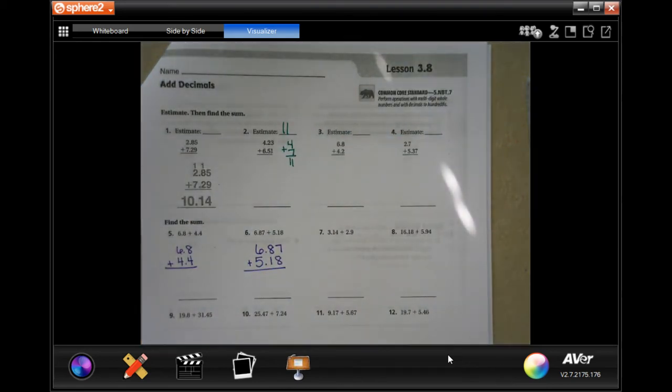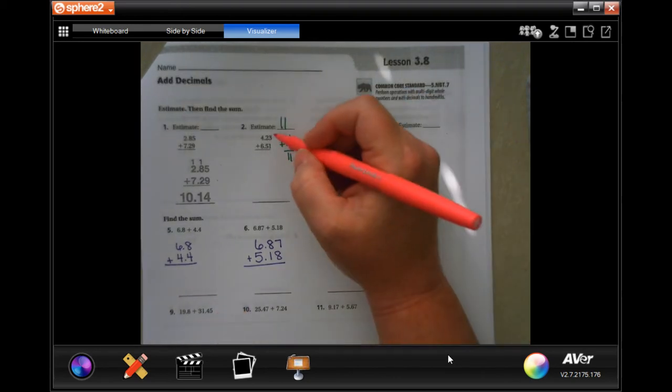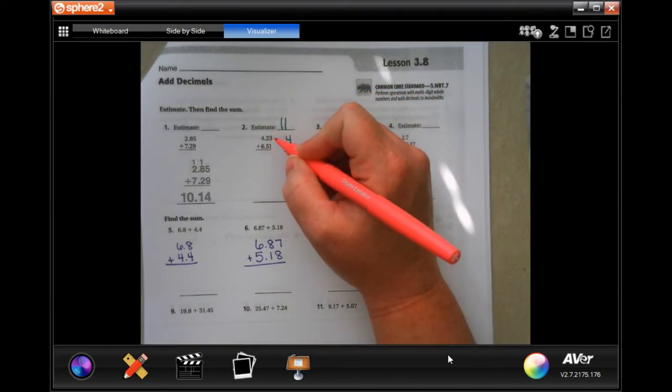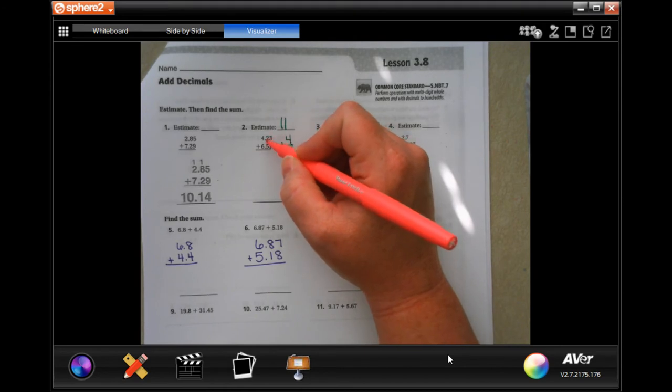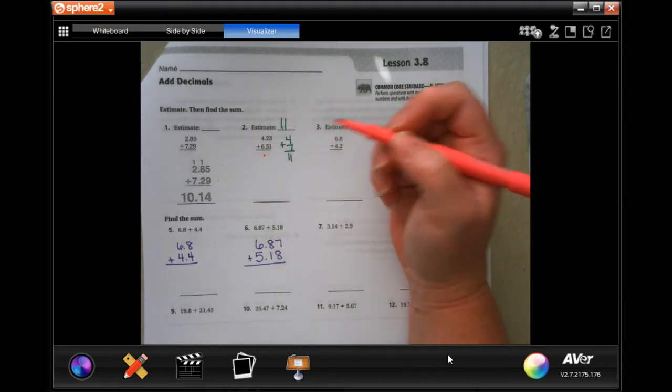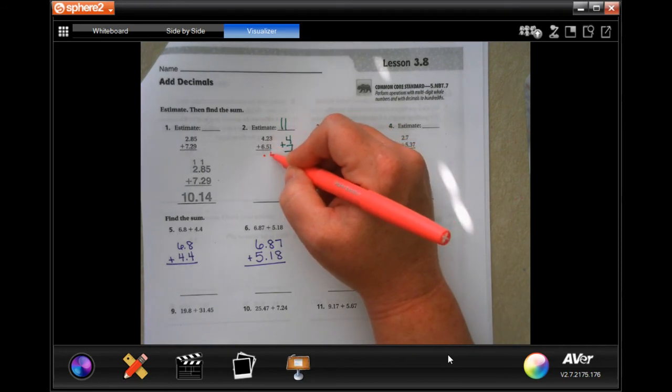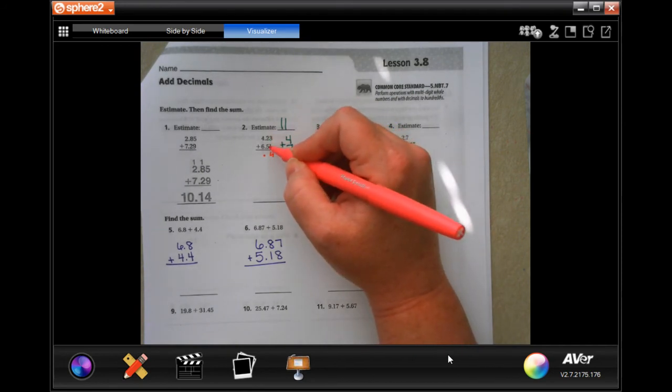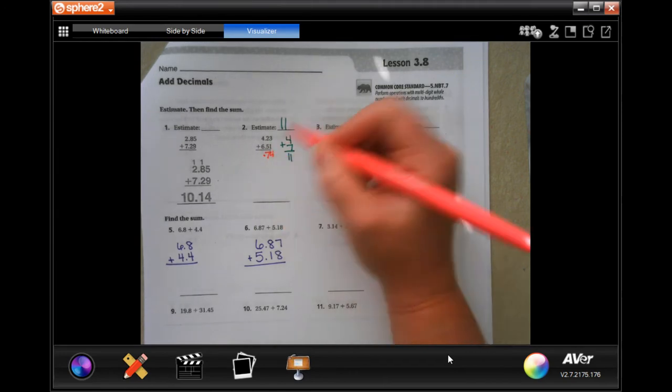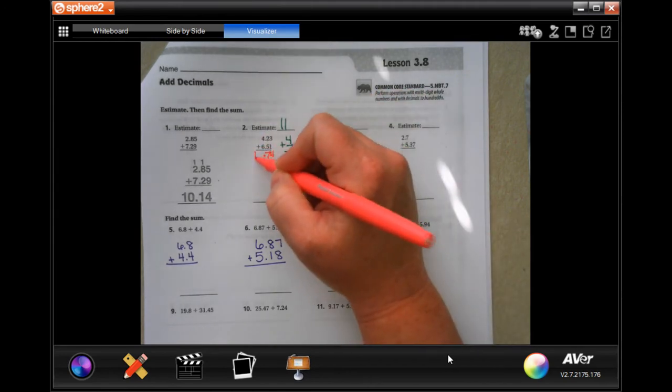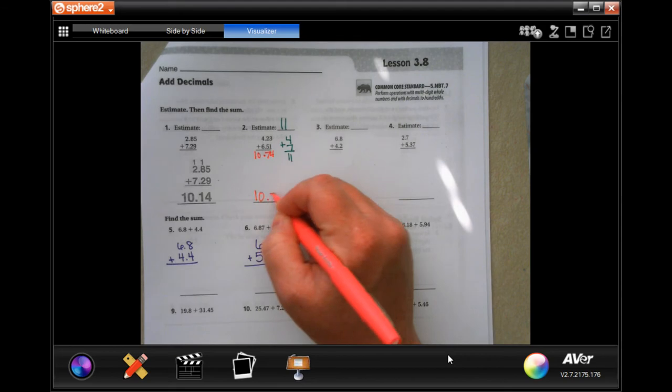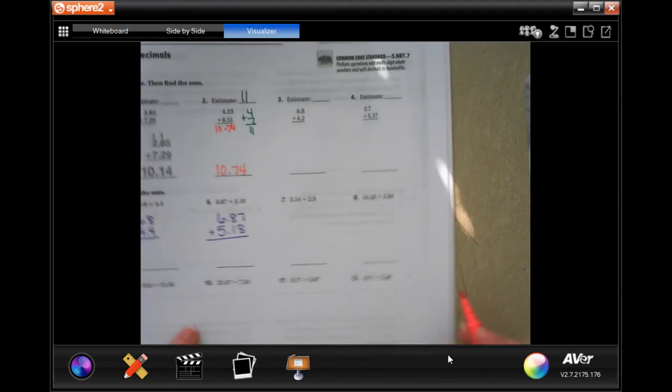Now we need to do the real math. Before we do anything, we are adding or subtracting decimals, so we need to drop our decimal straight down. Now 3 plus 1 is 4, 2 plus 5 is 7, and 4 plus 6 is 10. So 10.74.